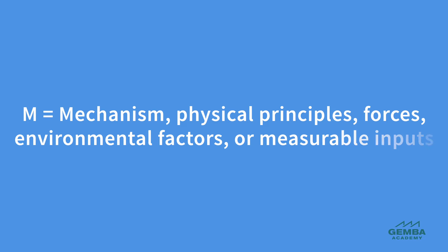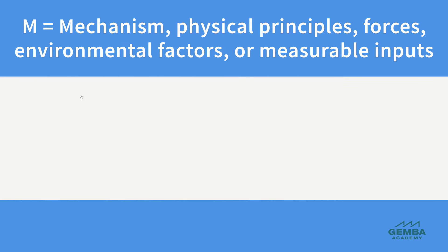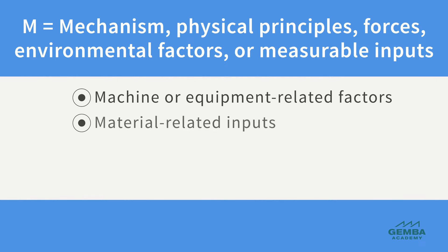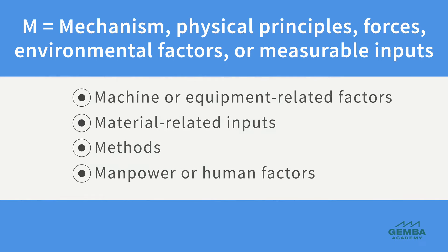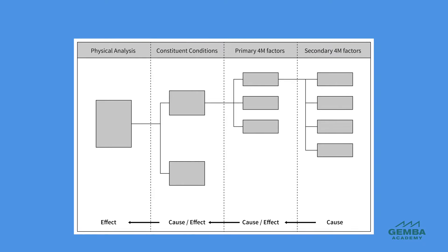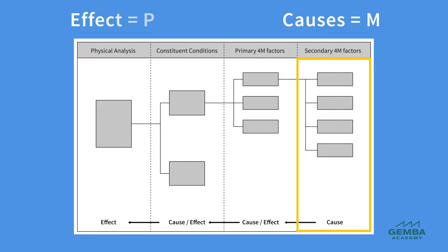The letter M stands for mechanism and refers to physical principles and other inputs. It's common to investigate detailed processes through the 4M inputs of machine, material, methods, and manpower. In other words, the P-M analysis approach studies phenomena or unwanted events in terms of their causal mechanisms and physical principles. M represents the complex set of interacting factors and causes, and P is the effect of these causes.